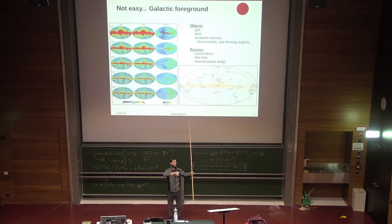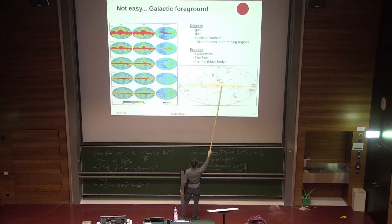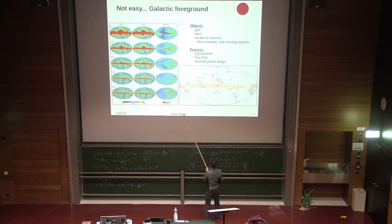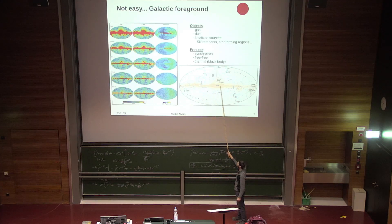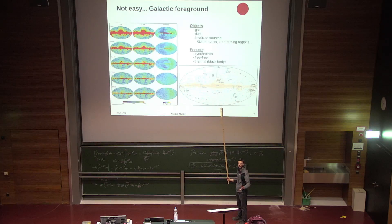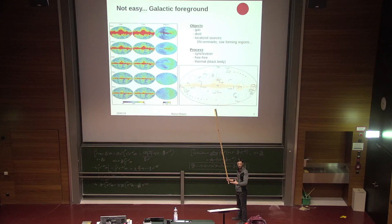Most of the gas and dust is along the disk of the Milky Way. We live inside it, so observing in all directions and opening up the map, we see all the main emission sources relevant for the millimetric regime across the Milky Way. The disk is clearly visible, and this region is highly polluted — so for CMB cosmological observations this region is typically avoided because it's very dangerous to use.